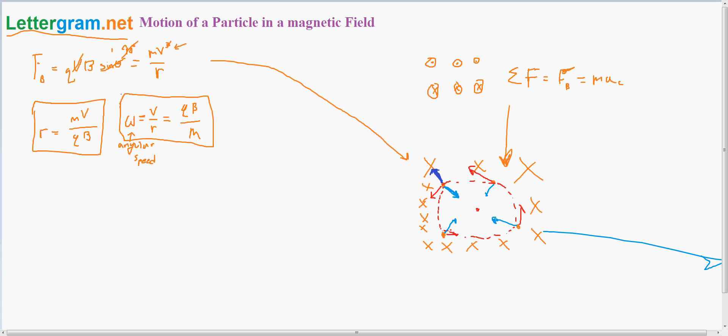The final equation is that of the period, or the time it takes for one rotation. That's equal to 2πr divided by the velocity, which is the distance divided by the speed. This is equal to 2π divided by the angular speed, which is also equal to 2πm/(qb), derived from this equation.